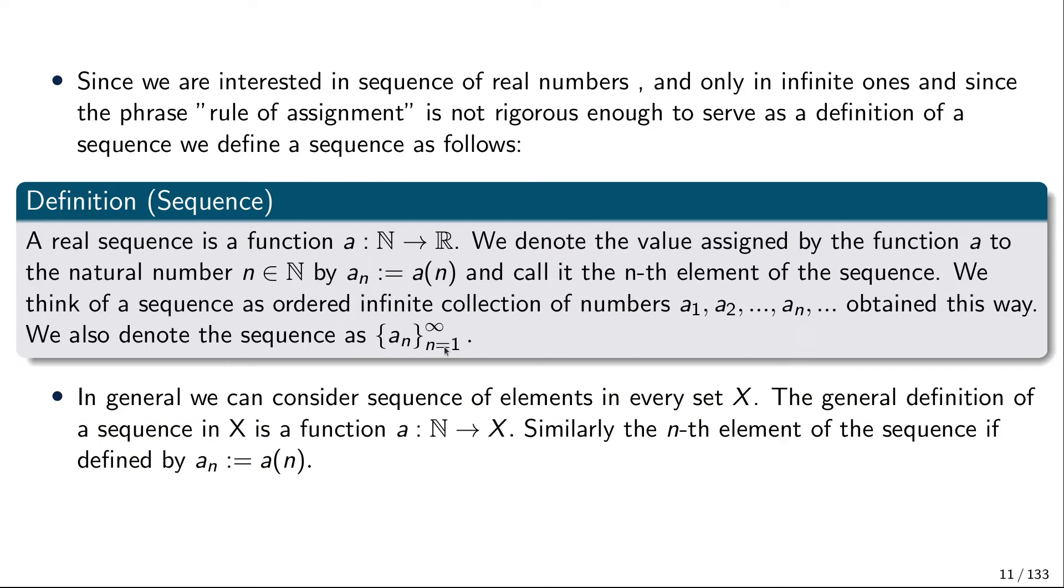Now we see that with this definition, as we defined a sequence to be a function from natural numbers to real numbers, in order to define a sequence all we need is a function from natural numbers to some set. Any rule of assignment that assigns to a natural number an element of another set is a sequence. We have a very general way of defining sequences. We could have sequences of natural numbers, rational numbers, real numbers, integers, complex numbers, points in a plane, points in abstract n-dimensional space, sequences of sets, and sequences of functions. It's a very general term.